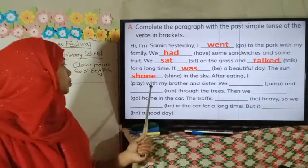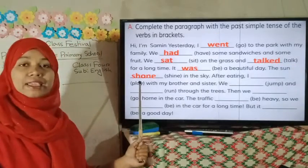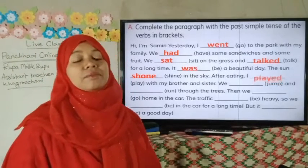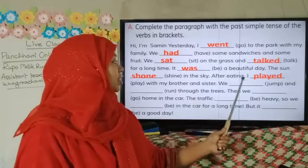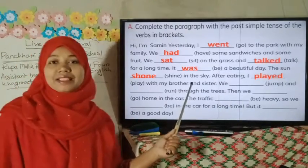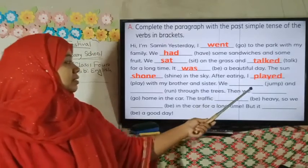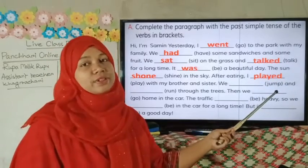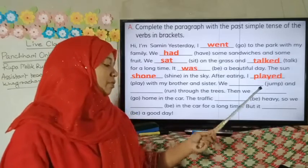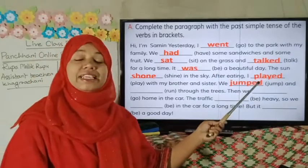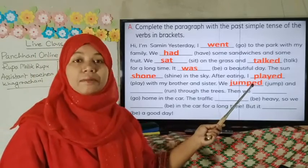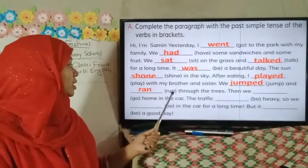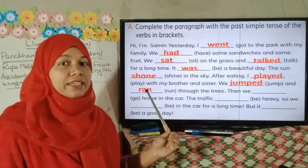'After eating, I [play] with my brother and sister.' The past form of play is 'played'. So: 'After eating, I played with my brother and sister.' Next: 'We [jump] and [run] through the trees.' We have to add -ed to jump to make 'jumped'. And for run, we write 'ran'. So: 'We jumped and ran through the trees.'